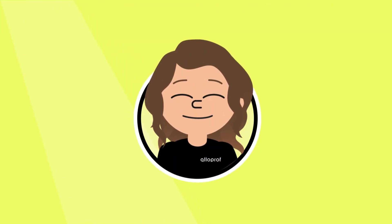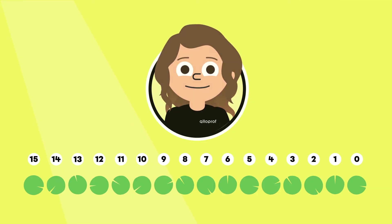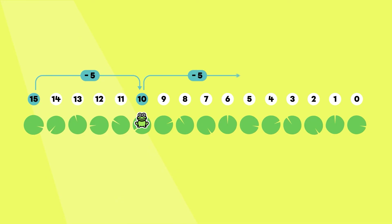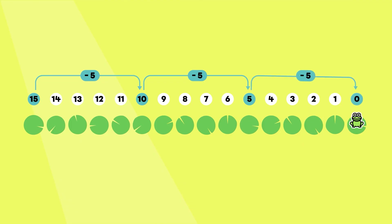As I told you earlier, it is possible to skip count in descending order. To do this, I have to subtract. I'm going to make the frog jump by five in descending order. In this example, the frog starts on lily pad fifteen. To make the first jump, I start by removing five from fifteen. Fifteen minus five equals ten. The frog jumps onto ten. Afterwards, I always subtract five from the new number. Ten minus five equals five. The frog jumps onto five. Finally, five minus five equals zero. The frog jumps onto zero.